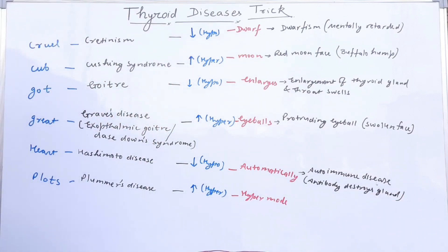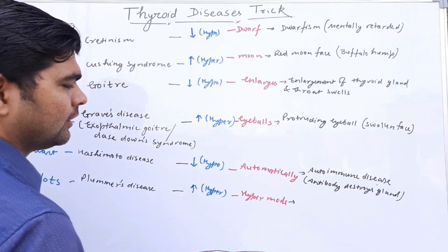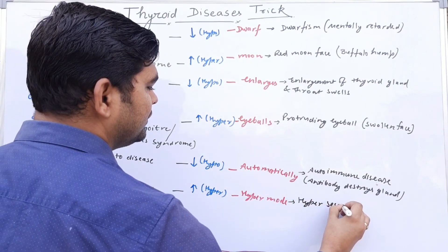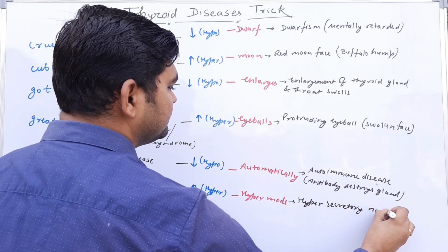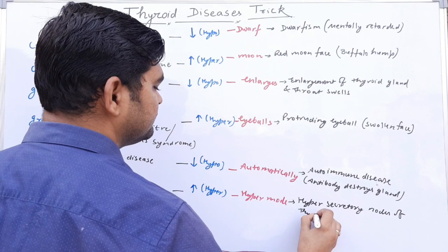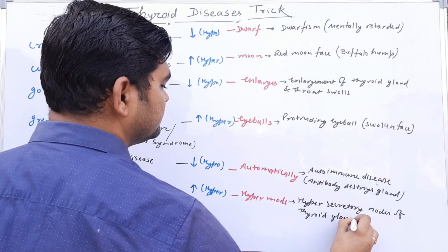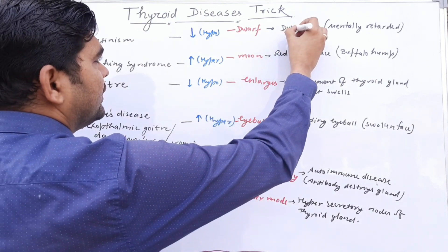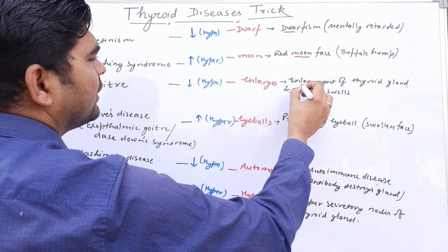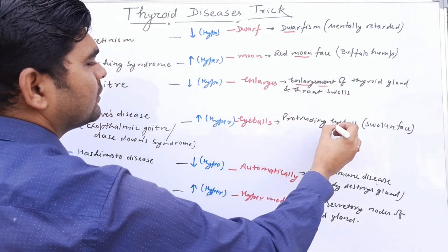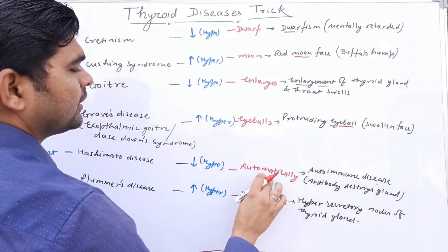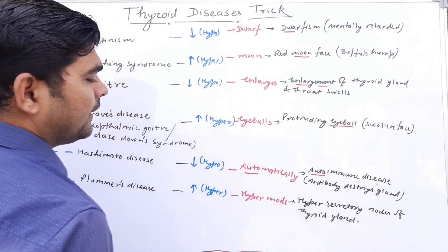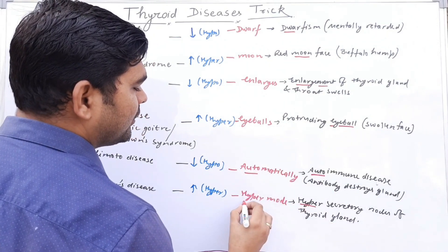Plummer's disease involves hyper secretory nodes of the thyroid gland. To decode the characteristics mnemonic: Dwarf means dwarfism, Moon means red moon face, Enlarges means enlargement of the thyroid gland, Eyeballs means protruding eyeball, Automatically corresponds to autoimmune disease, and Hyper mode means hyper secretory mode.